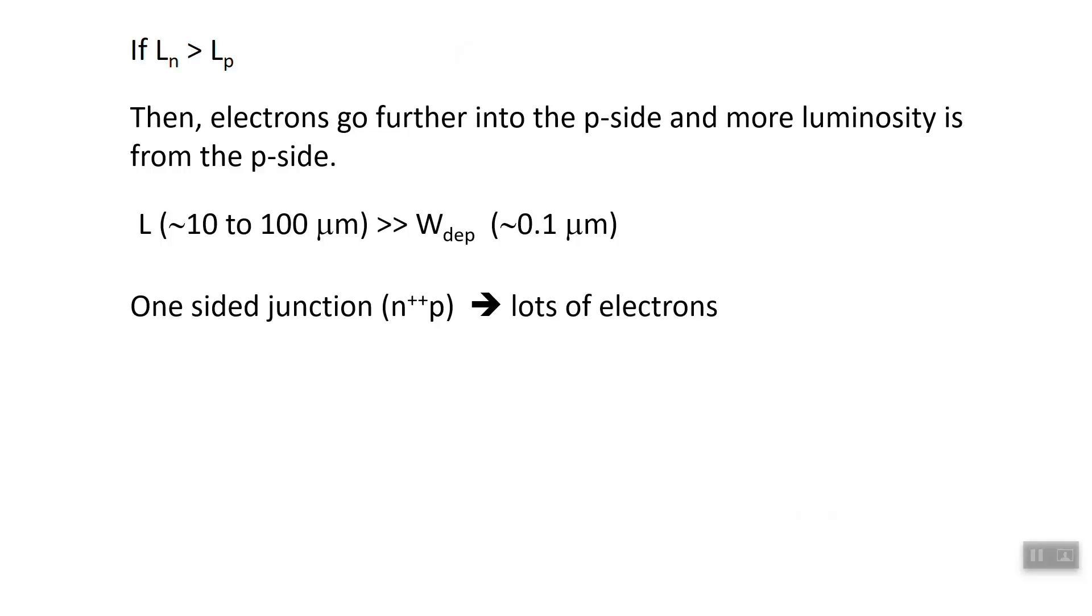We make one-sided junctions to do this—a one-sided junction which is very heavily doped on the n-side to make lots of electrons that can diffuse a long way into the p-side. You might wonder, why not do the opposite, have a heavily doped p-side junction instead? If you look at the mobility of electrons and holes, you realize that electrons always have a higher mobility than holes.